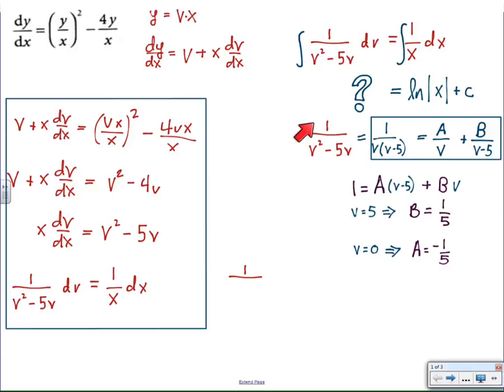In other words, the fraction or rational function 1 over (v² - 5v) is actually the same as -1/(5v) + 1/(5(v - 5)). So we can integrate that, factoring out the 1/5, and then we can integrate each one becoming the natural log of v and the other becoming the natural log of (v - 5). Of course, absolute values would be necessary there, but we'll take care of that.